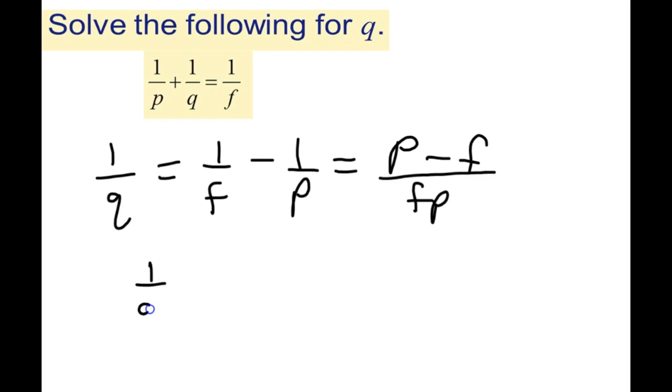So what we have is 1 over Q equals P minus F over FP. And now you're at a point in the problem where you can take the reciprocal to get the correct answer.